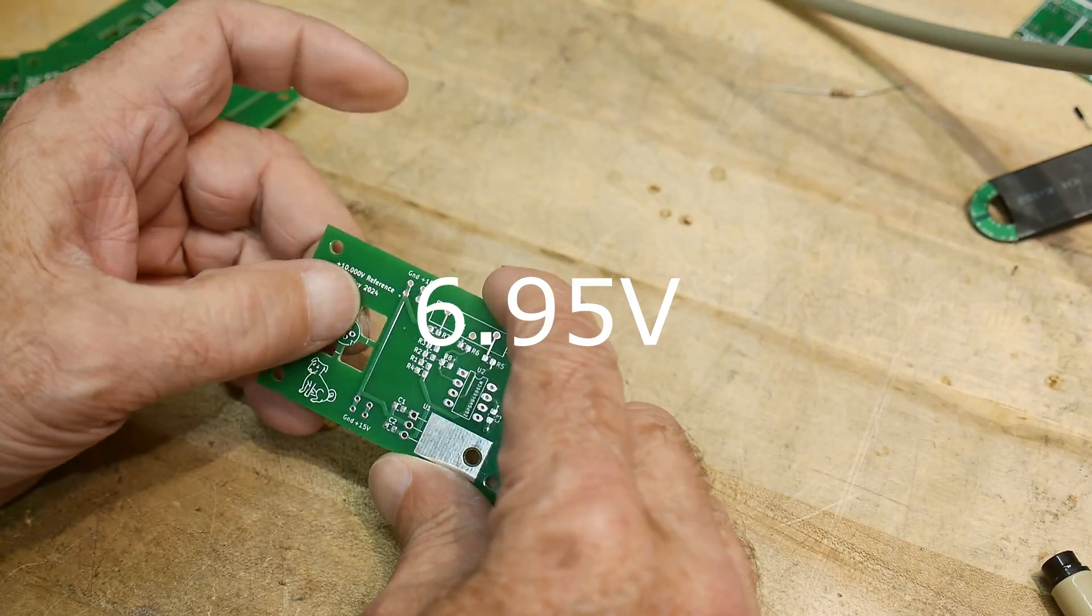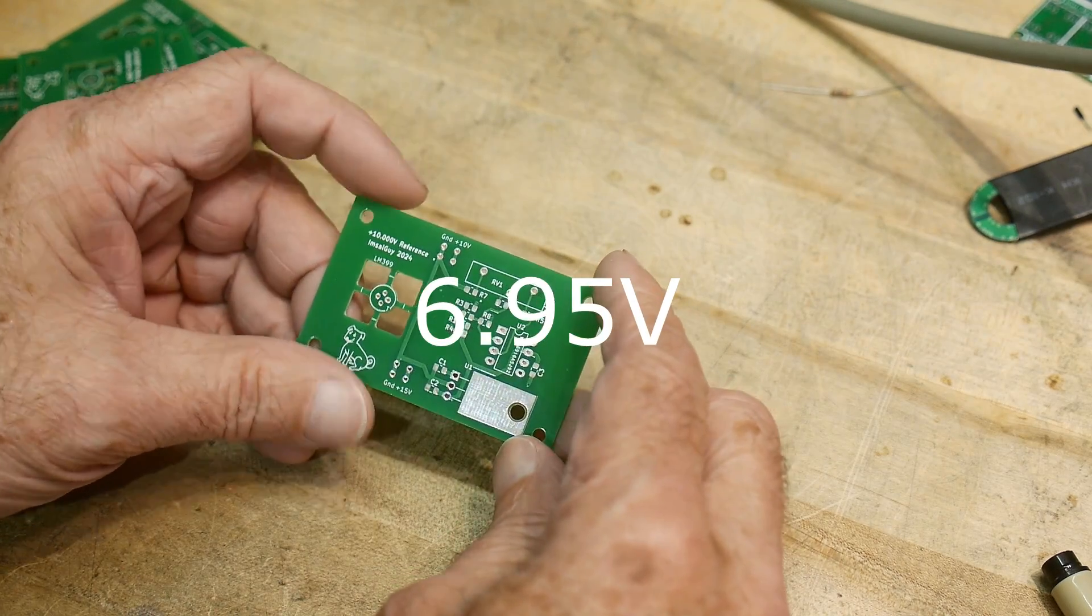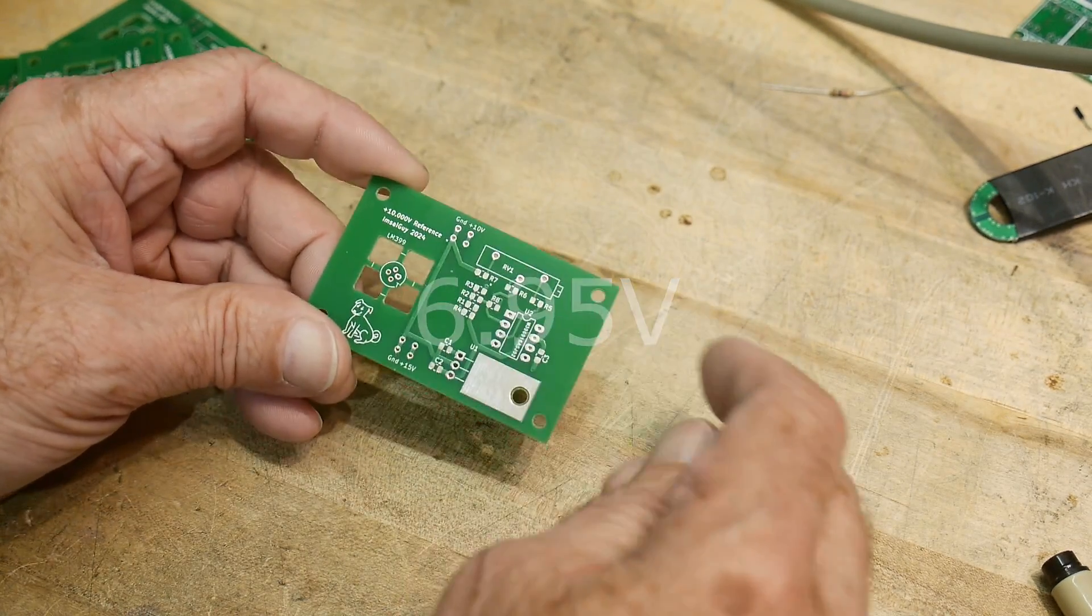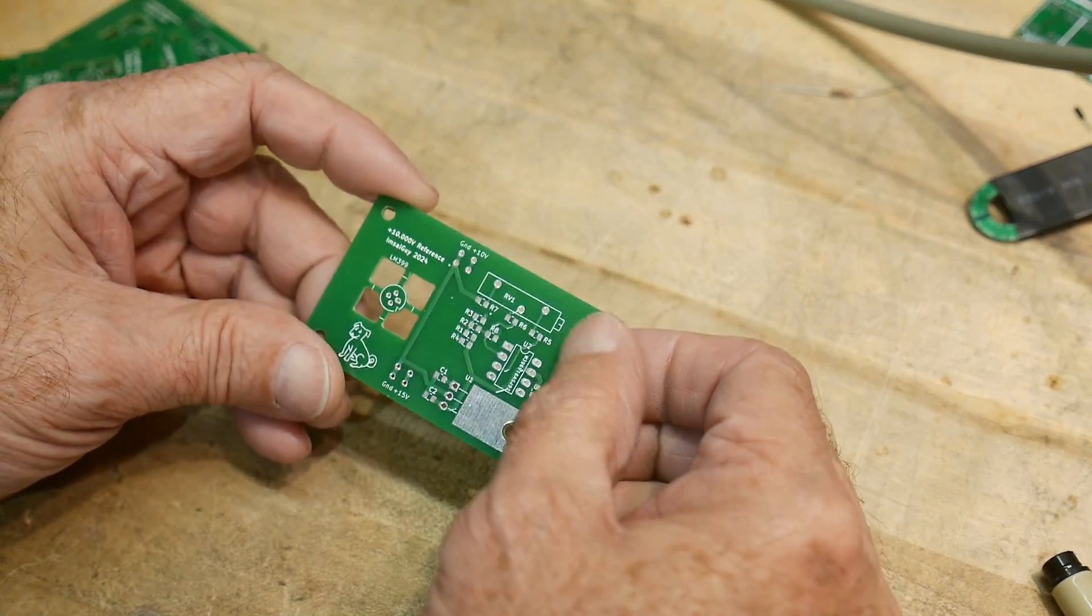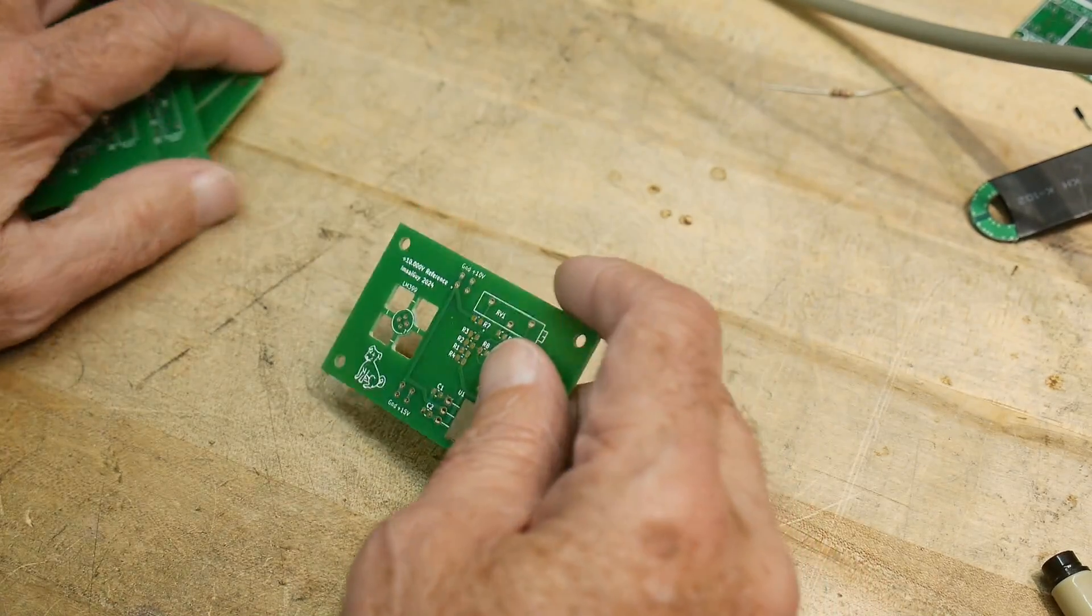I think it's three point something volts. You multiply it up and get 10 volts, so that's what this circuitry over here does. There's a 10-turn pot adjustment. Yeah, let's build one up.